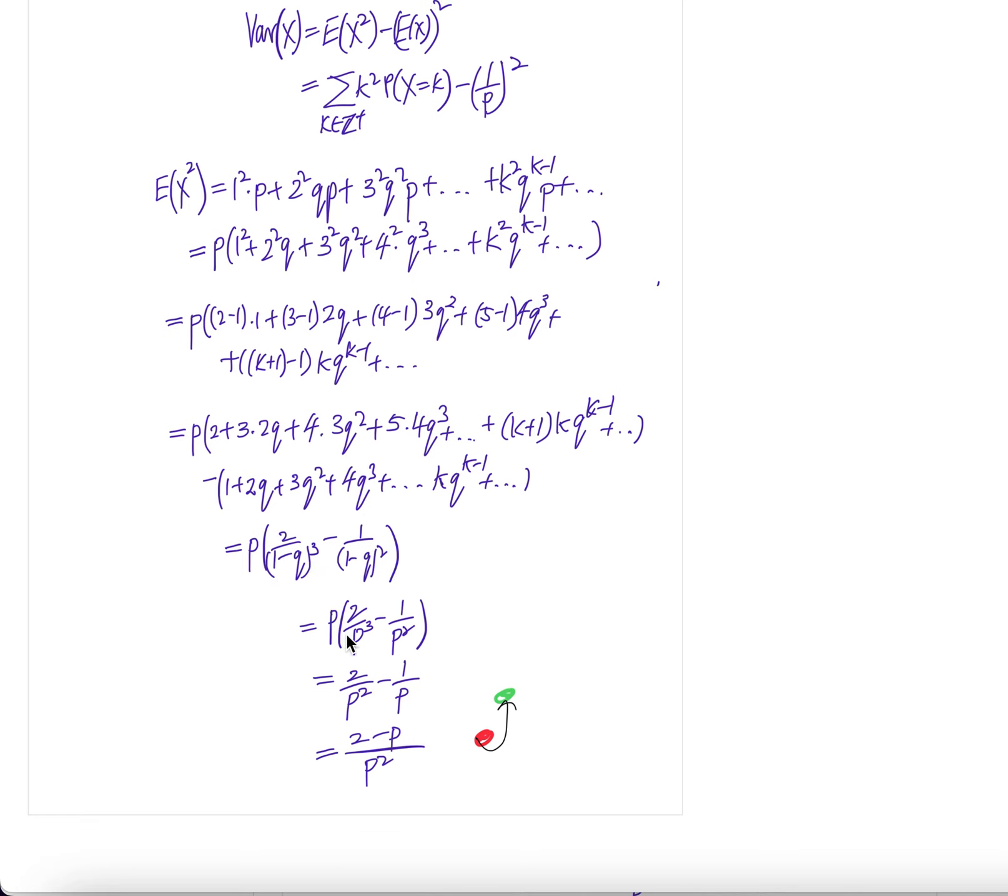But 1 minus q is p, replace them by p, so it will be 2 over p cubed. Here it will be 1 over p square. Pull out 1 over p, cancel with p, so it will be 2 over p square minus 1 over p. Now here it will be over p square, 2 minus p. Done.